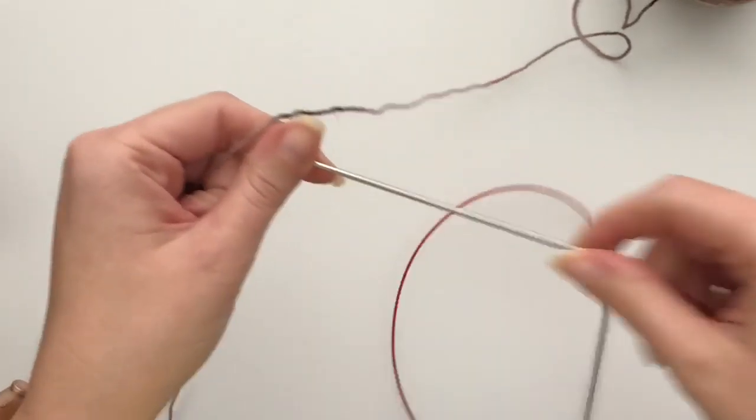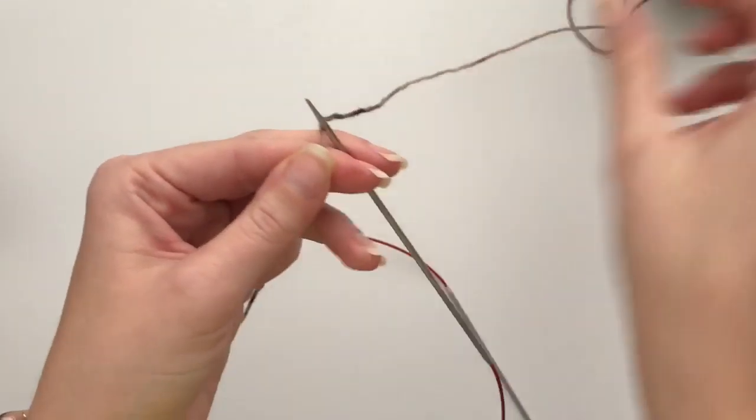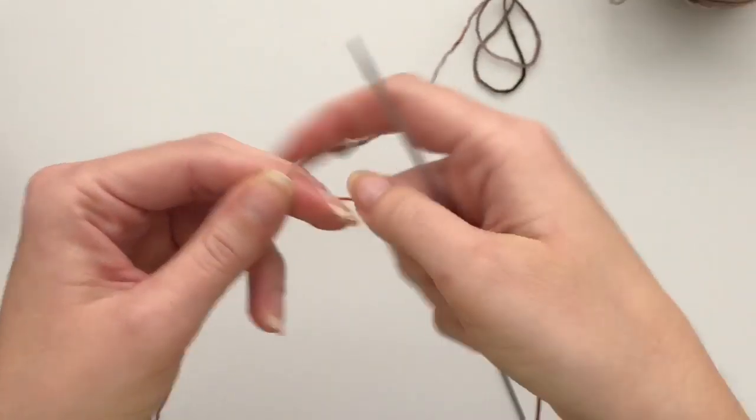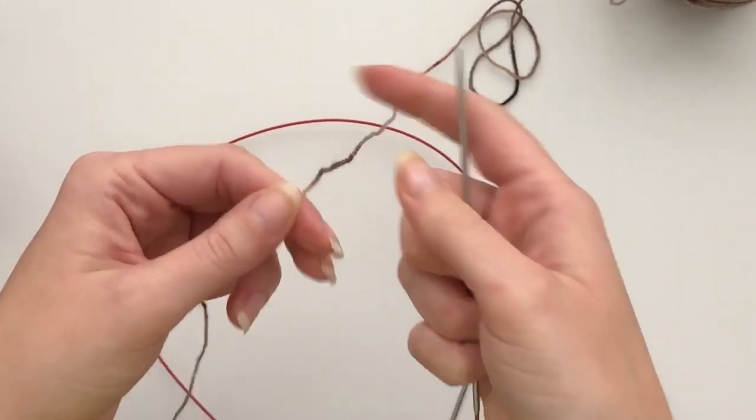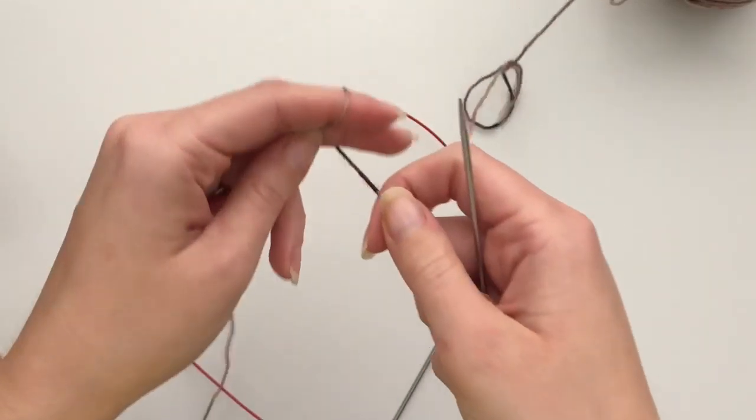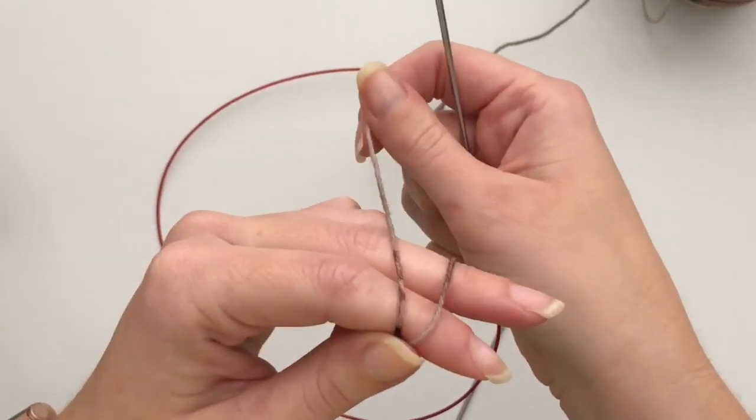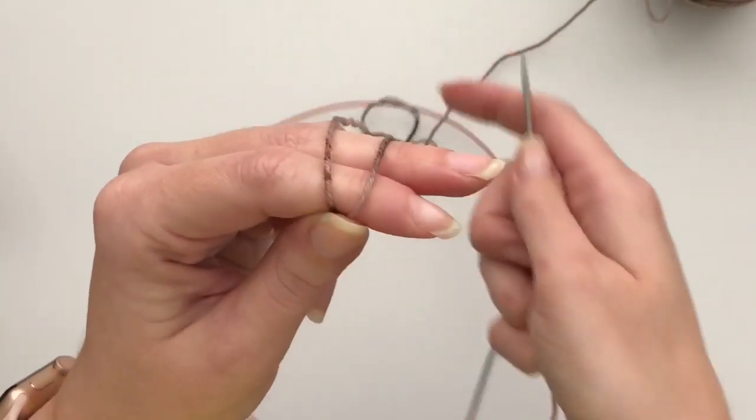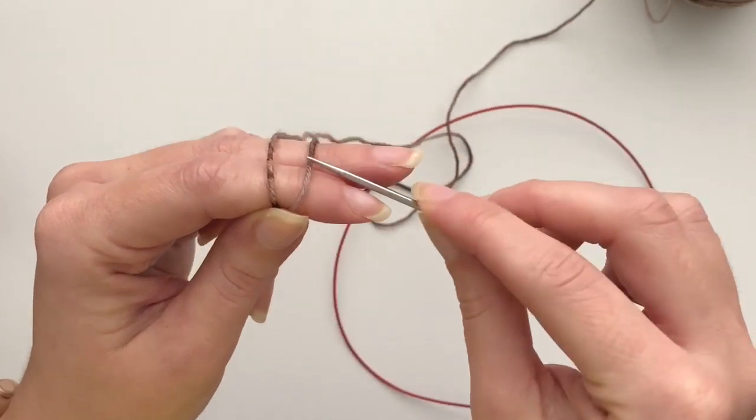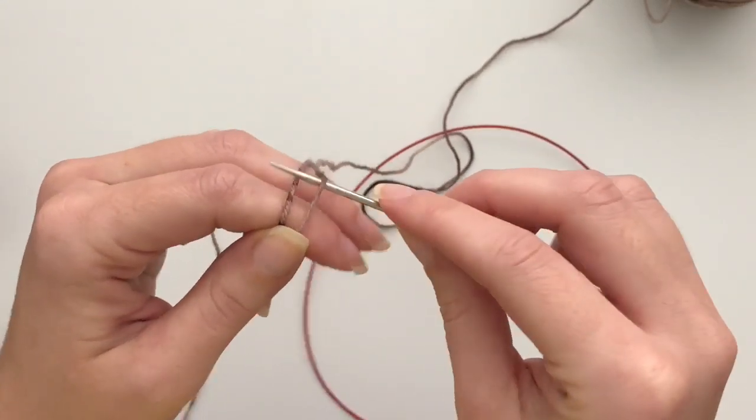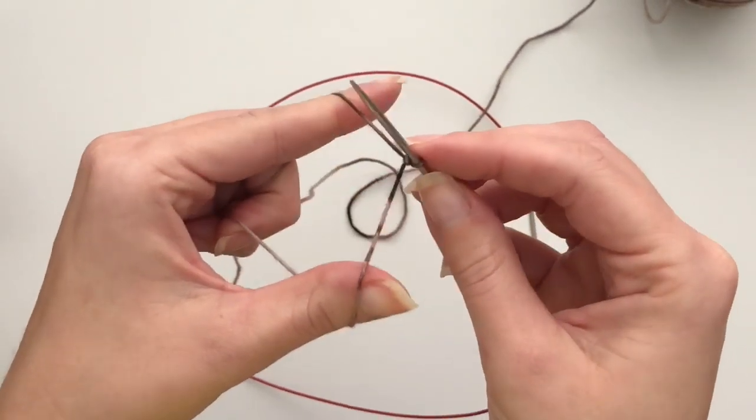So to do a slipknot, we are going to take the yarn. I have this side coming from the cake and then this side is the tail end. We're going to take the yarn and wrap it around our pointer and our middle finger and then put this working end over to the left of that. Then the way that I do it is I stick my needle through that loop, grab the working end, and then pull it snug on the needle.